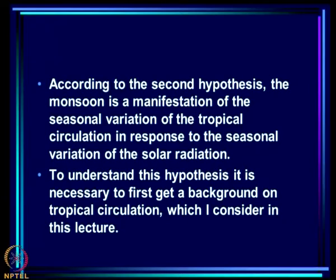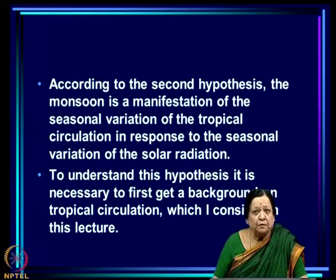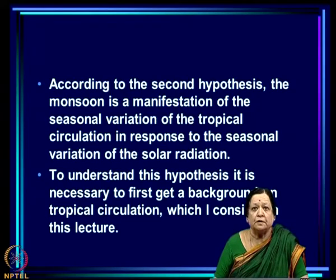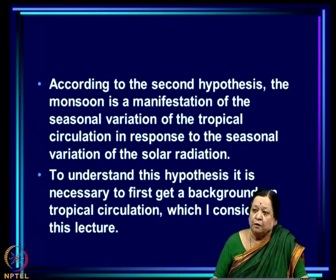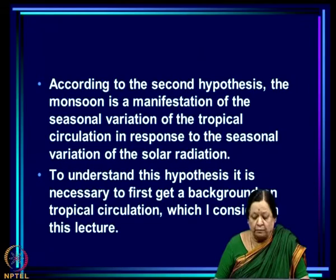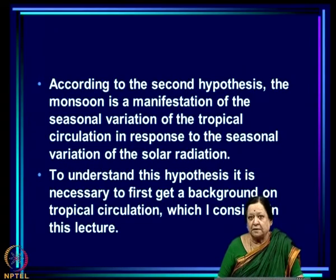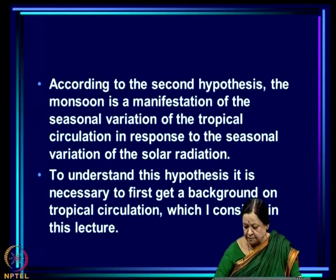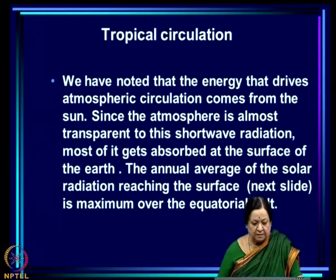According to the second hypothesis, the monsoon is a manifestation of the seasonal variation of tropical circulation in response to the seasonal variation of solar radiation. To understand this hypothesis, it is necessary to first get a background on tropical circulation itself, which we will consider first in this lecture.